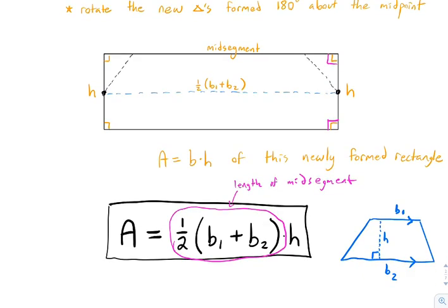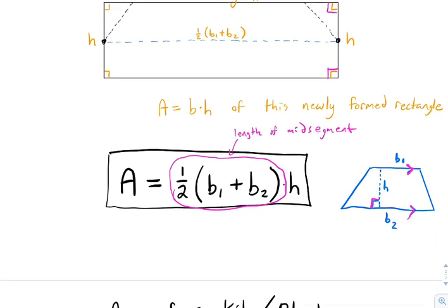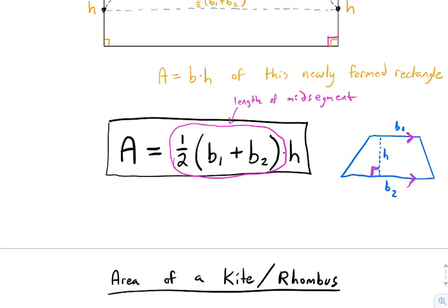In the picture I labeled where B1, B2, and the height come from. The height must be a right angle, and the bases refer to the two sides that are parallel. Now let's look at the area of a kite and rhombus. We already know a rhombus is a parallelogram, so we can use base times height — but we're going to look at it a little differently now.